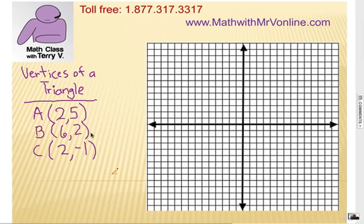that is, on a coordinate graph, if you're given the three points of the vertices of a triangle: 2, 5; 6, 2; and 2, negative 1, what kind of triangle is it? So we're going to plot these points, connect the lines, and see if we can determine what kind of triangle it is.